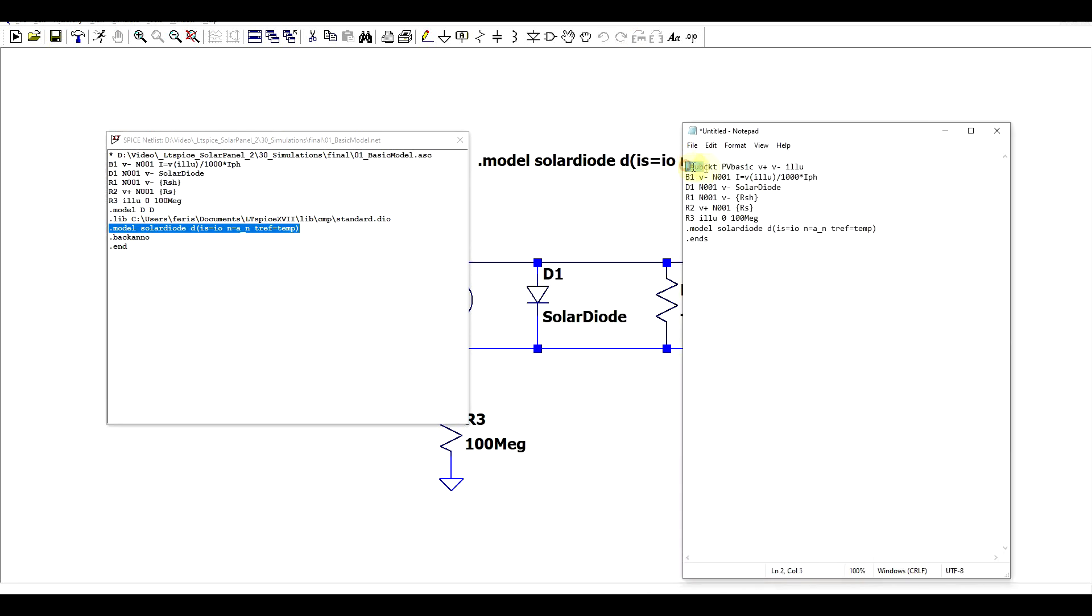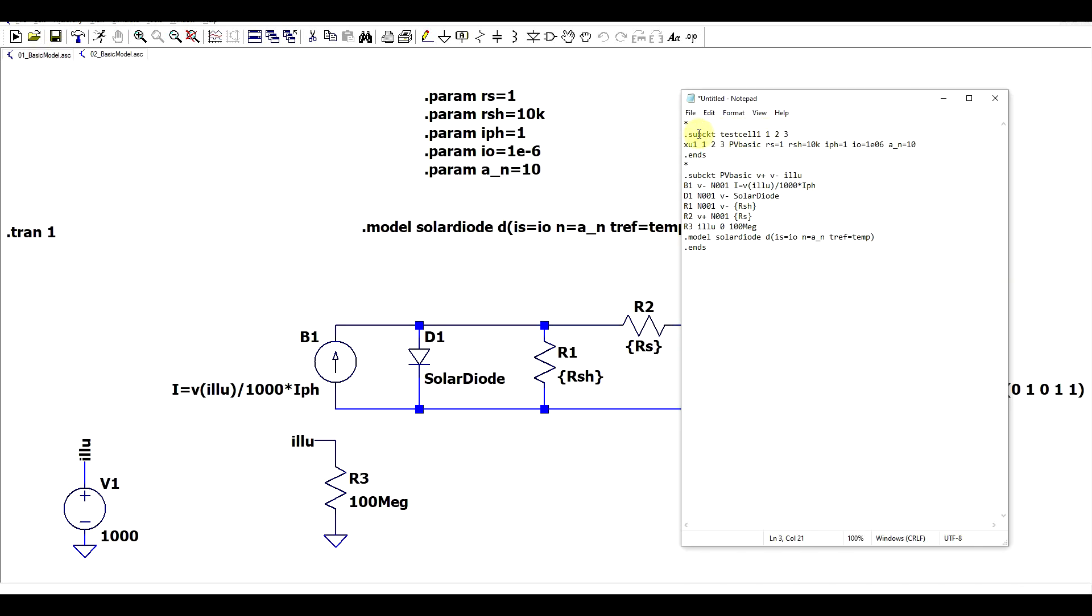I also included the model of the diode and we end everything up with the dot end statement and then to begin with we need to define a subcircuit. So a subcircuit that will contain all of these things. We will define a subcircuit that is called PVBasic and it has three interface pins: V plus, V minus and illumination.